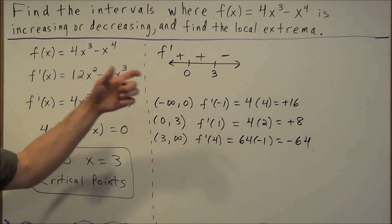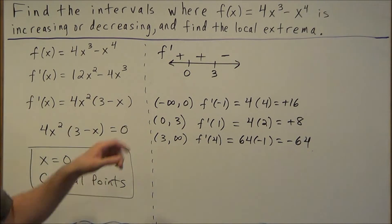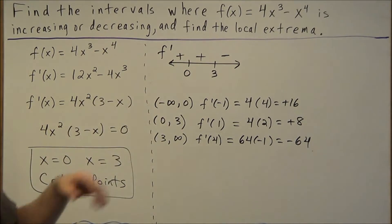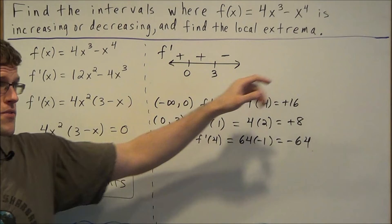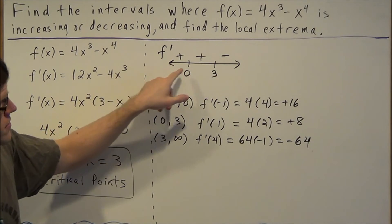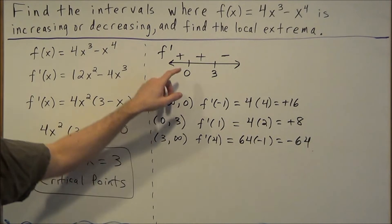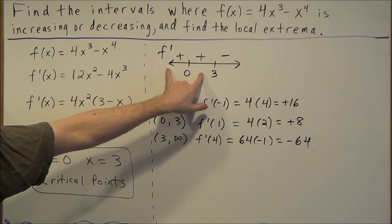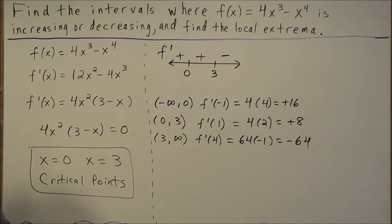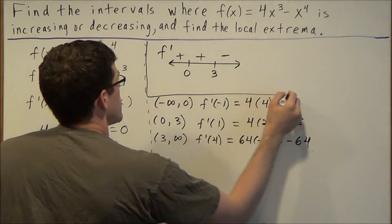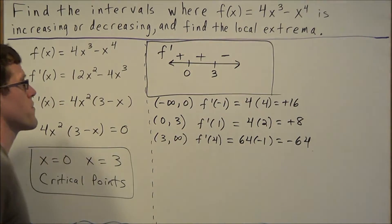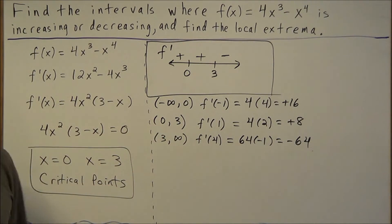The most common mistake here is that students record the positive sign in the first interval and assume it changes from one interval to the next, concluding positive, negative, positive. But notice that at zero there is no sign change — the sign stays positive across both the first and second intervals. This sign chart for f prime is the most important part of the problem; once you have it, you're basically ready to answer.